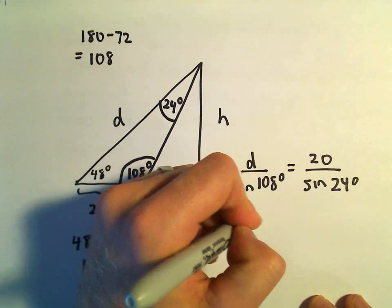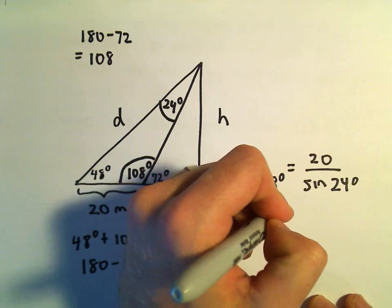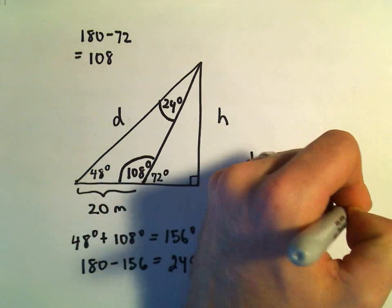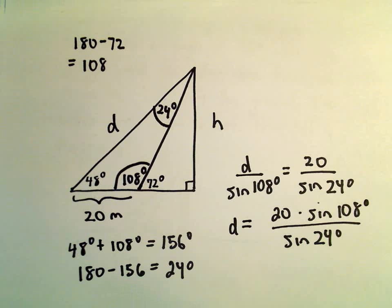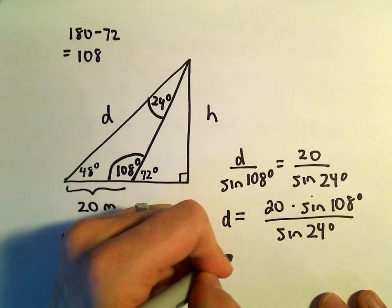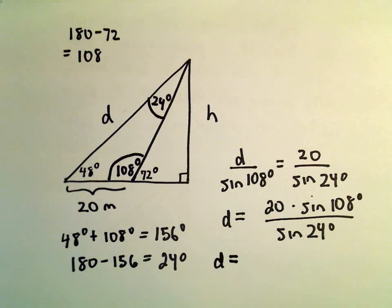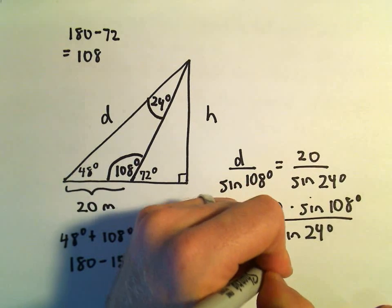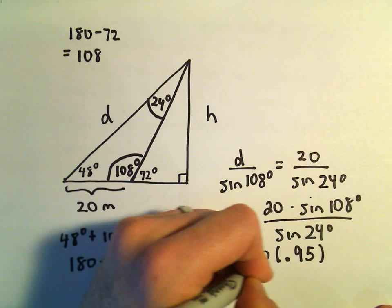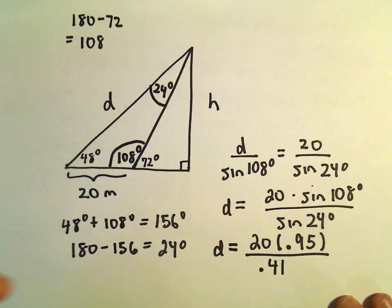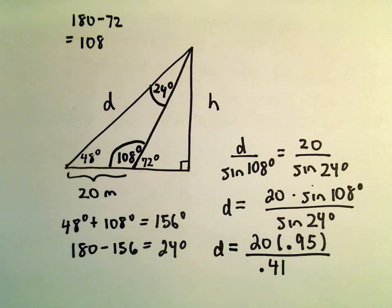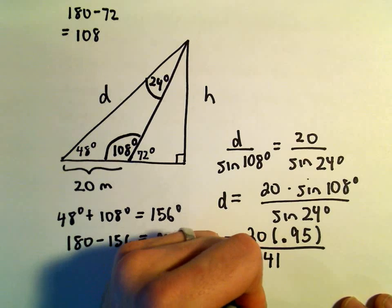Well, all we're going to do is multiply both sides by sine of 108 degrees. So we'll have 20 times sine of 108 degrees over sine of 24 degrees. And now let's stick all this in a calculator and get some values. I'm definitely going to round off here a little bit. So sine of 108 degrees, I'm getting that to be .95. Sine of 24 degrees after rounding, I'm getting that to be .41. So if we do 20 times .95, that's 19, divided by .41, I'm getting D to be equal to 46.34.